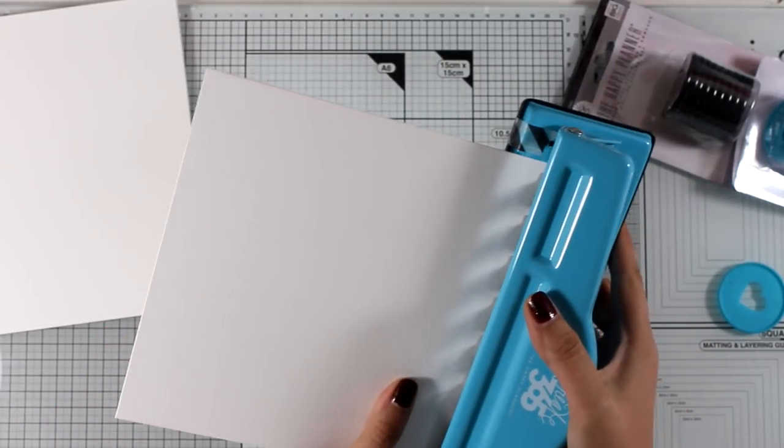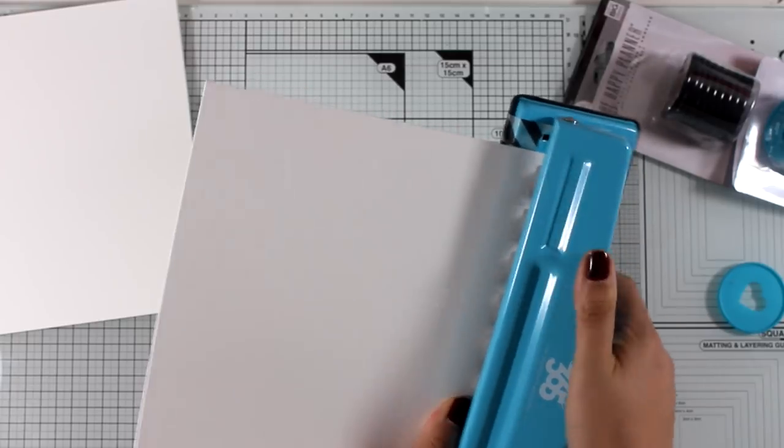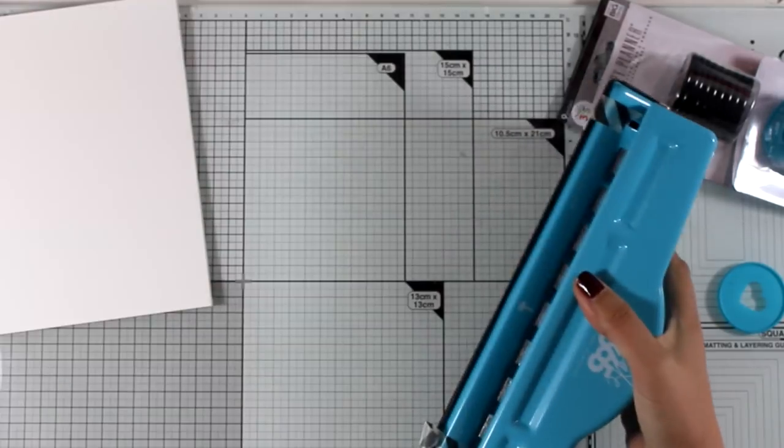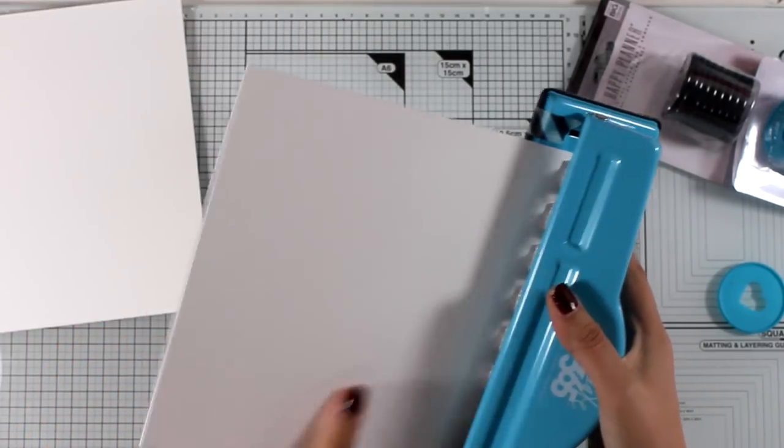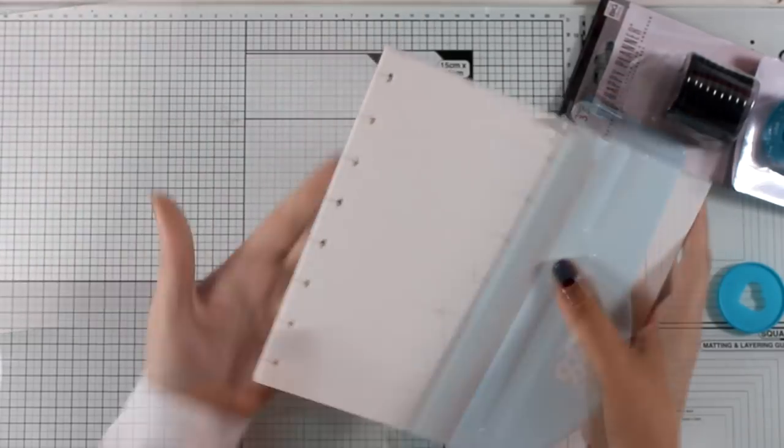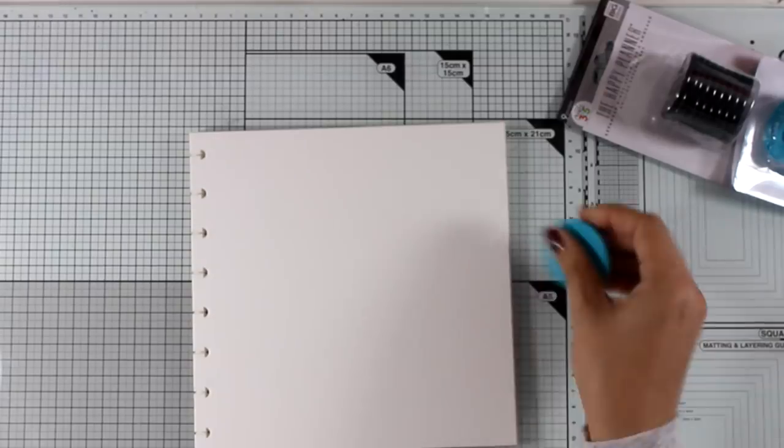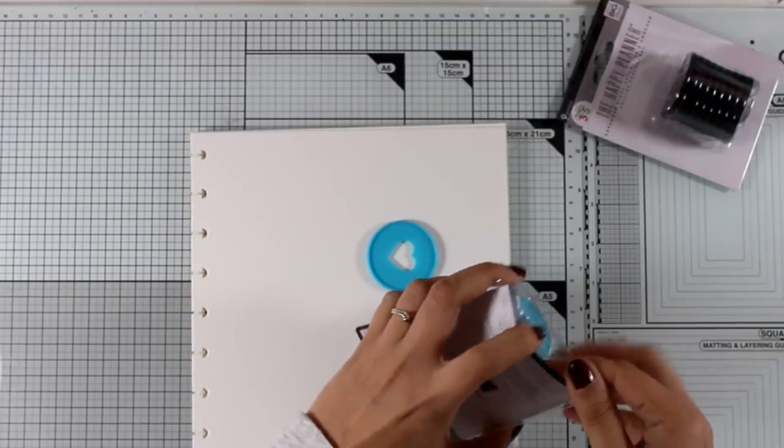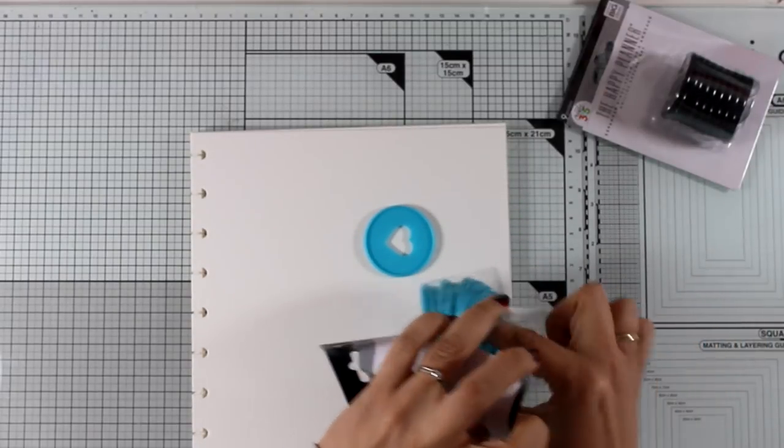But it is time-consuming, and you do have to invest in the punch and buy the paper and buy the discs. If you don't want to get into all that trouble, I'm going to link you down below to different sizes of all these art journals that you can get, and they are actually on sale right now.